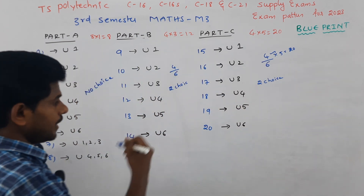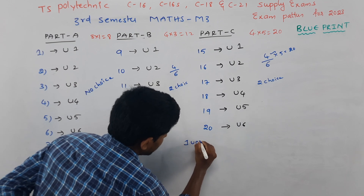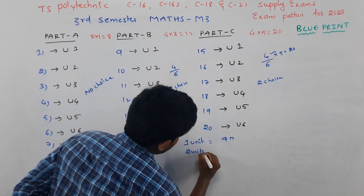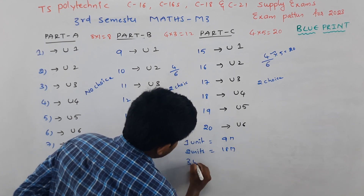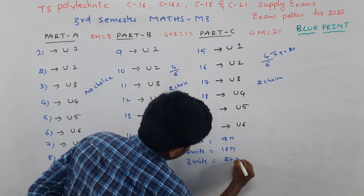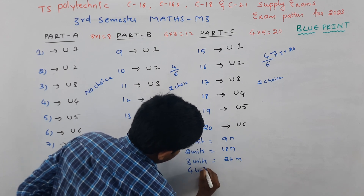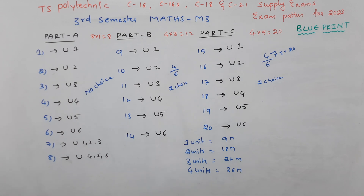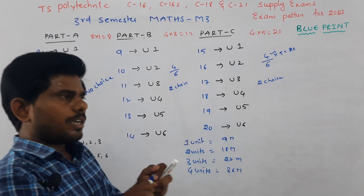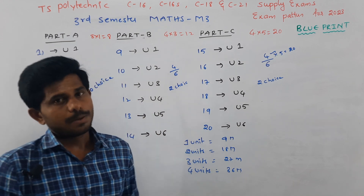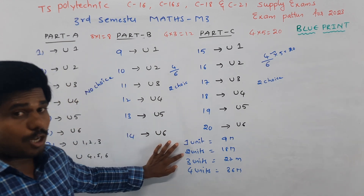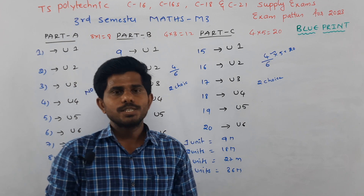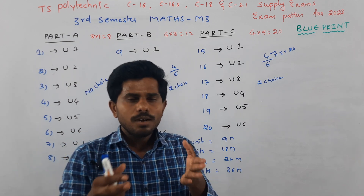If you prepare one unit, you can score around 9 marks. Prepare two units and you get 18 marks. Three units prepared gives 27 marks. Four units gives 36 marks. So if you prepare two units perfectly — selecting those two units 100% — you can clear the exam.